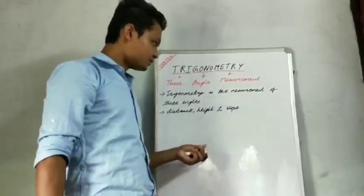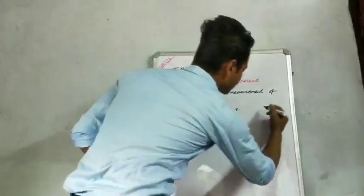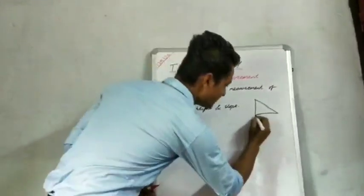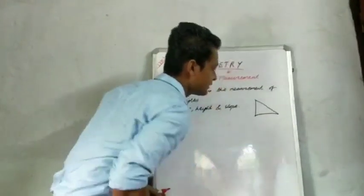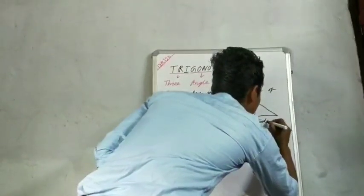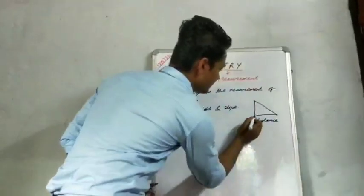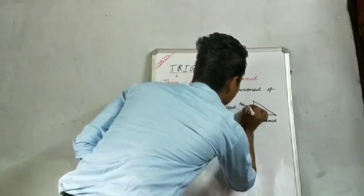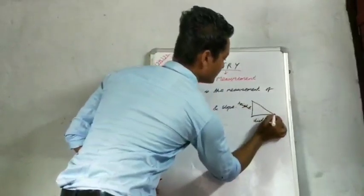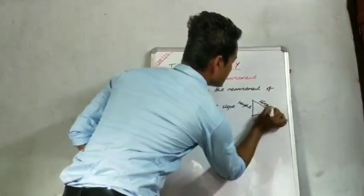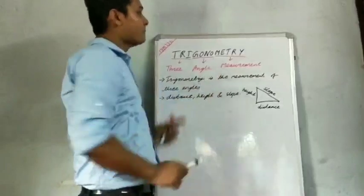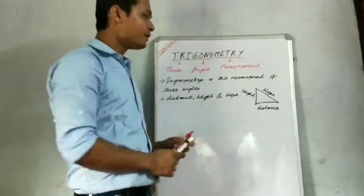Let us understand this through a structure. Consider this is a triangle. From here to here, if you consider, this is the distance. And from here to here, if you consider, this is the slope. That means this chapter, Trigonometry, basically deals with the measurement of a right-angle triangle.